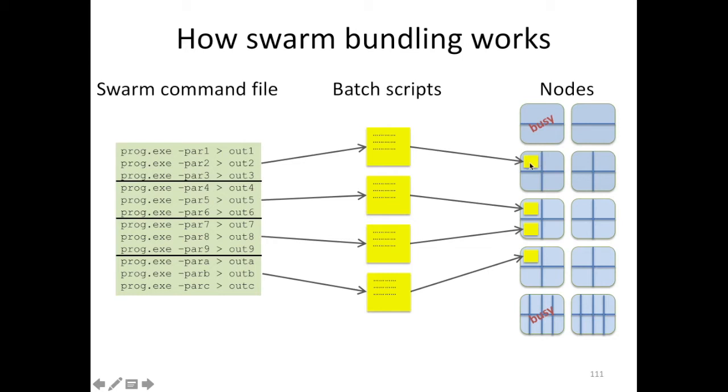So as you can see, this would take three times as long as if there were 12 independent subjobs in the swarm. But for very large swarms, this is the only way to submit them. And it's highly recommended for short-running jobs as well.